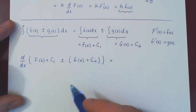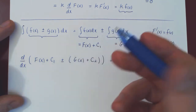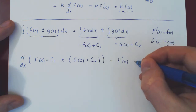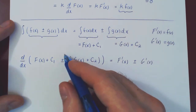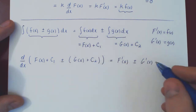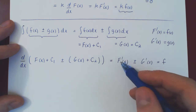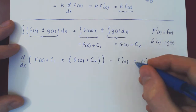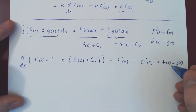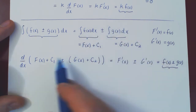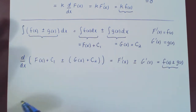Using properties of differentiation, we have a sum or difference of four terms and can differentiate one at a time. Differentiating uppercase F gives F prime; the derivative of c1 is zero. Plus or minus, the derivative of uppercase G gives G prime; the derivative of c2 is zero. Since uppercase F prime is lowercase f and uppercase G prime is lowercase g, we get lowercase f plus or minus lowercase g. We took the derivative of our answer and got back the original function — this proves both properties of integration.